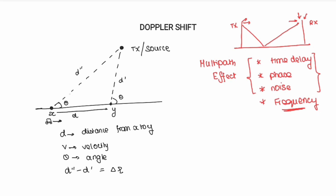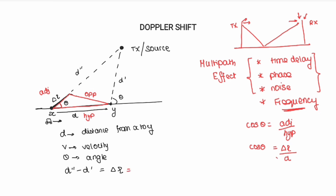Now I will calculate del L. Looking at the diagram and using trigonometry on the triangle formed, the opposite side is del L, and the hypotenuse is the distance D. Using cos(theta) equals adjacent divided by hypotenuse, we get cos(theta) = del L / D. Therefore, del L = D · cos(theta). Since distance D = velocity × time = V·t, substituting gives del L = V·t · cos(theta).